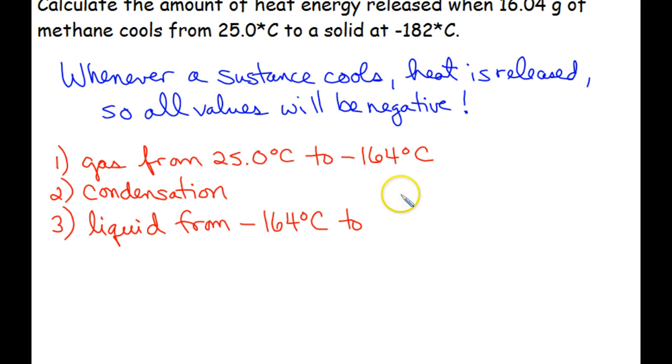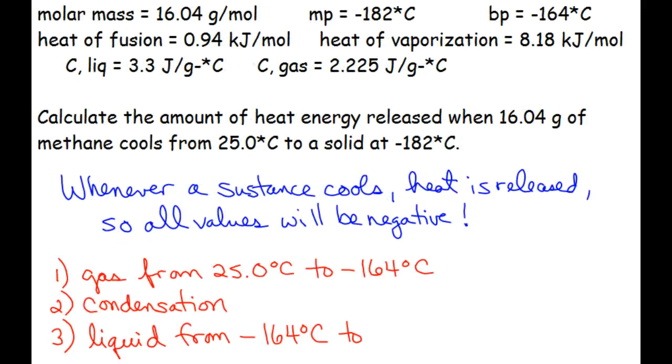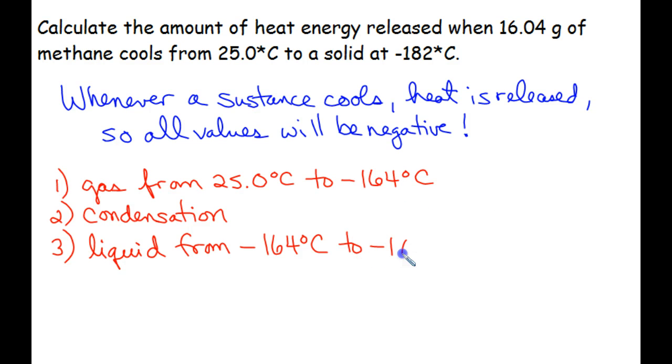Once we've condensed, we have a liquid, and it's going to start at its boiling point, and we're going to cool it to negative 182 degrees Celsius, which, if you happen to remember, is also the melting point, or freezing point in this case. And we specifically said that we are ending at the solid phase, so that means the very last thing that happens to this methane is that it freezes. So we're going to have four separate calculations, and then to get the total amount of heat energy, we're going to take the sum of those things.